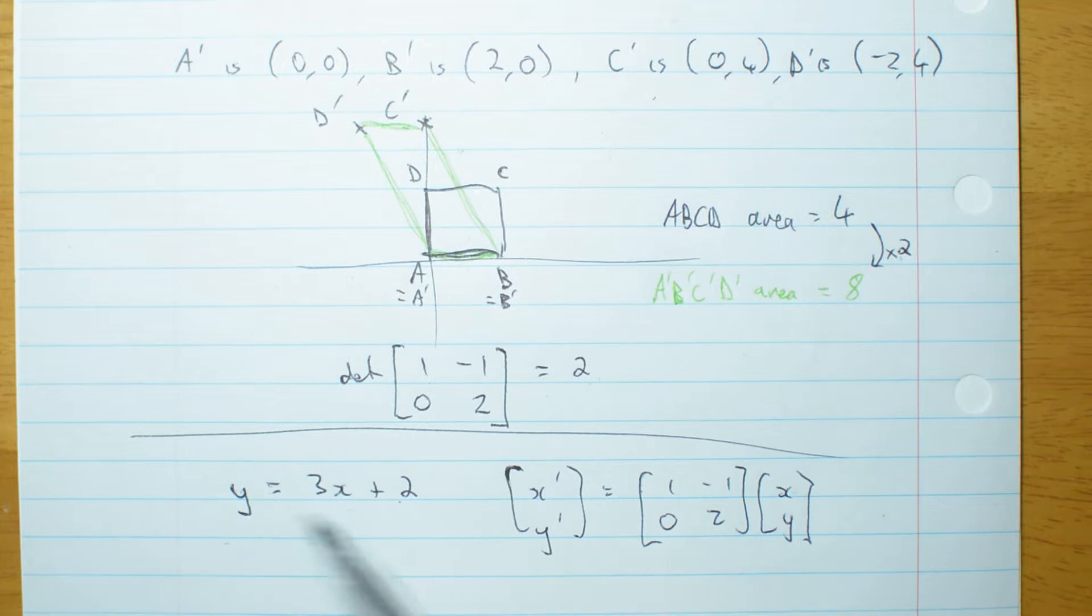But I have an equation here with x and y. What I want is an equation with x dashed and y dashed. So I'm going to find a way to substitute x, y for something else involving x dashed and y dashed. How do I solve this for x, y?